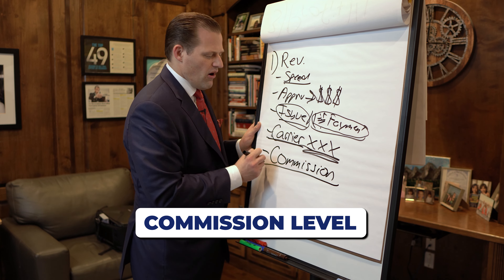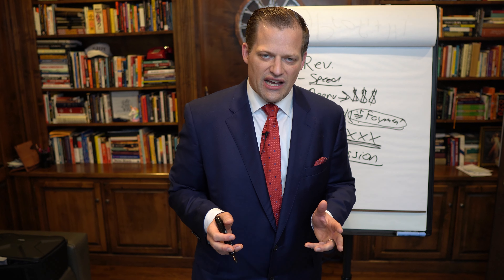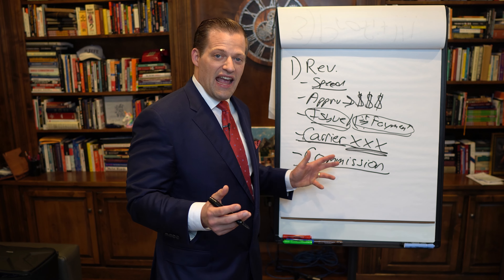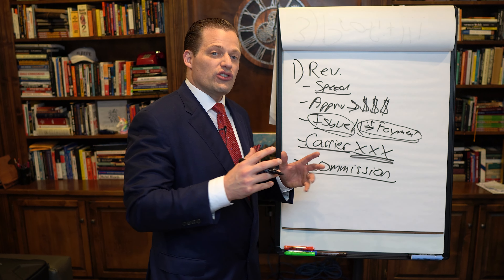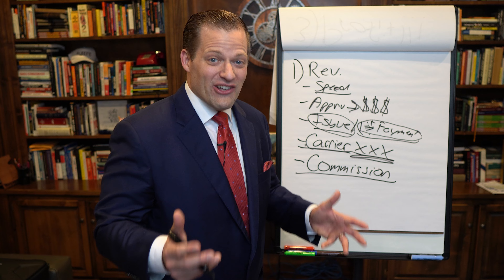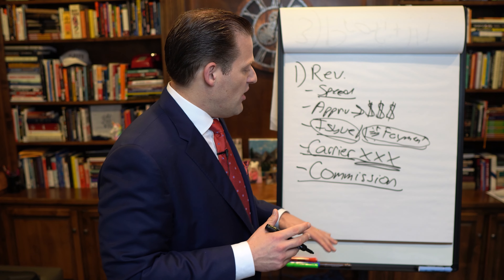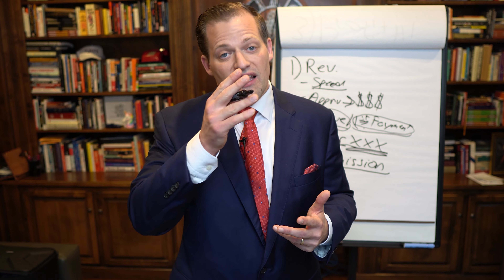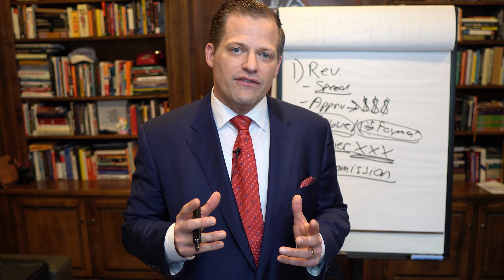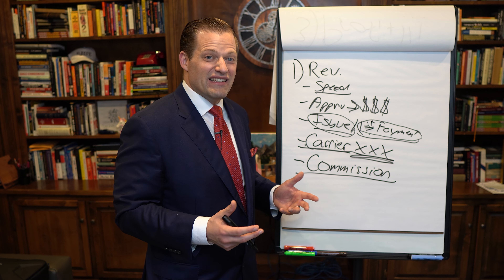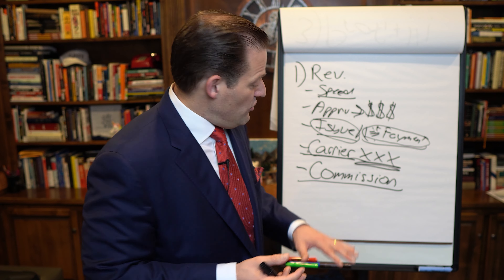Another thing to be concerned about is your commission level as it relates to the agency you're a part of. Some organizations show commission levels that just aren't true — they say you're at 80%, but when you read the comp grid, only one or two carriers are actually at 80% while the rest of the good carriers are at 50–60%. Make sure you're checking the actual first-year commission across all carriers. At the Dig Agency, we show agents a comp grid based on all first-year commissions they can expect as a new agent and what levels they can grow to.